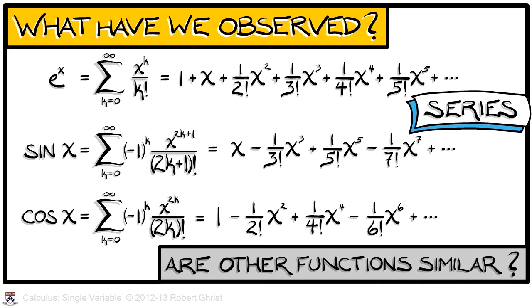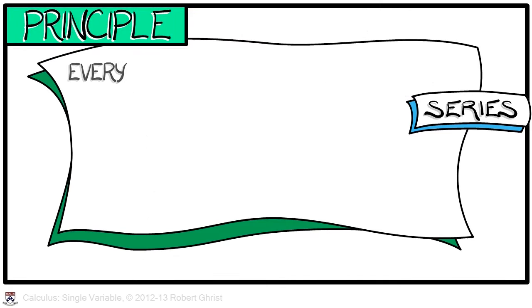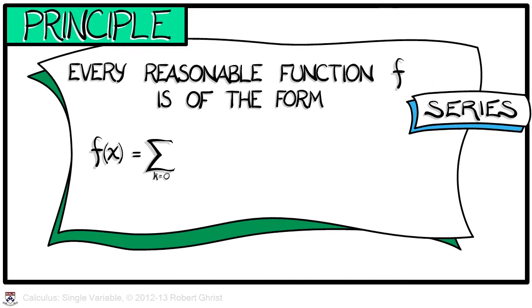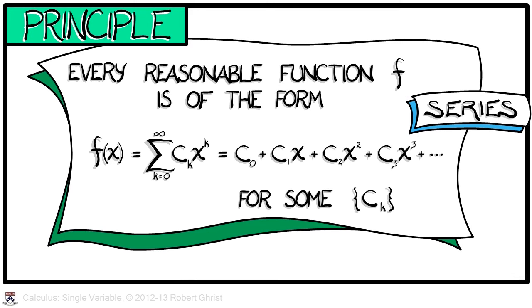The question arises: are there other similar expressions for different functions besides these basic three? The answer is an emphatic yes. We're going to work under the assumption that every reasonable function can be expressed in the form of a series as a constant plus some other constant times x plus a third constant times x squared, etc., for some collection of constants. Strictly speaking, this is not true — we need to be careful about what we mean by "every" and "reasonable" — but for the moment, let's pretend that this is true and see where it gets us.